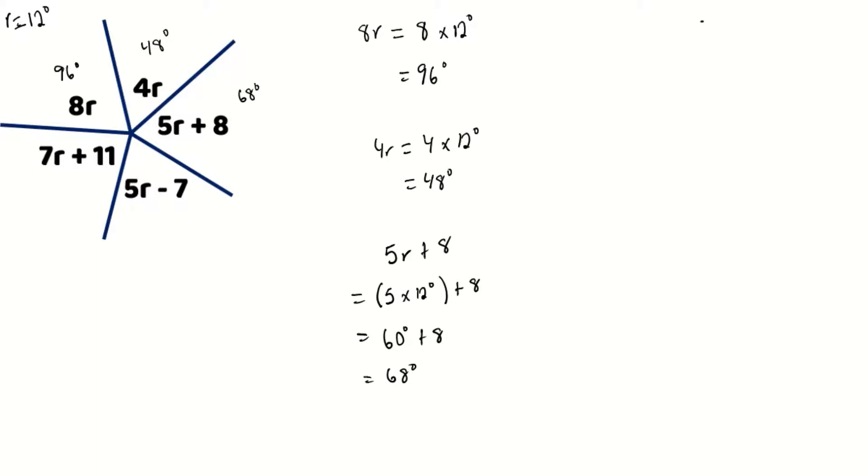We're now going to calculate our 5r minus 7. 5 times 12 degrees, and then its product will subtract 7. So 5 times 12 is 60 degrees. 60 degrees minus 7 will equal 53 degrees.